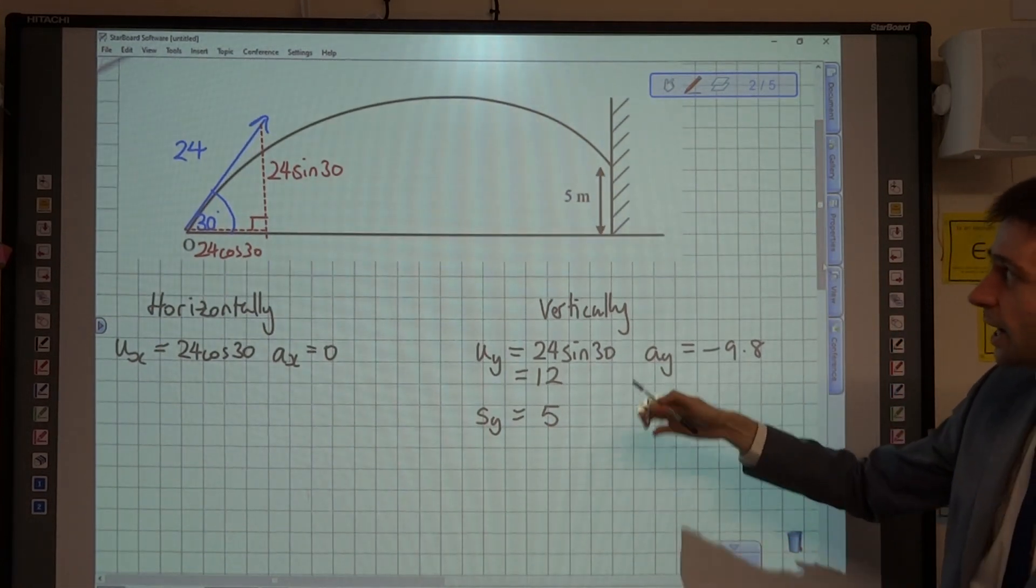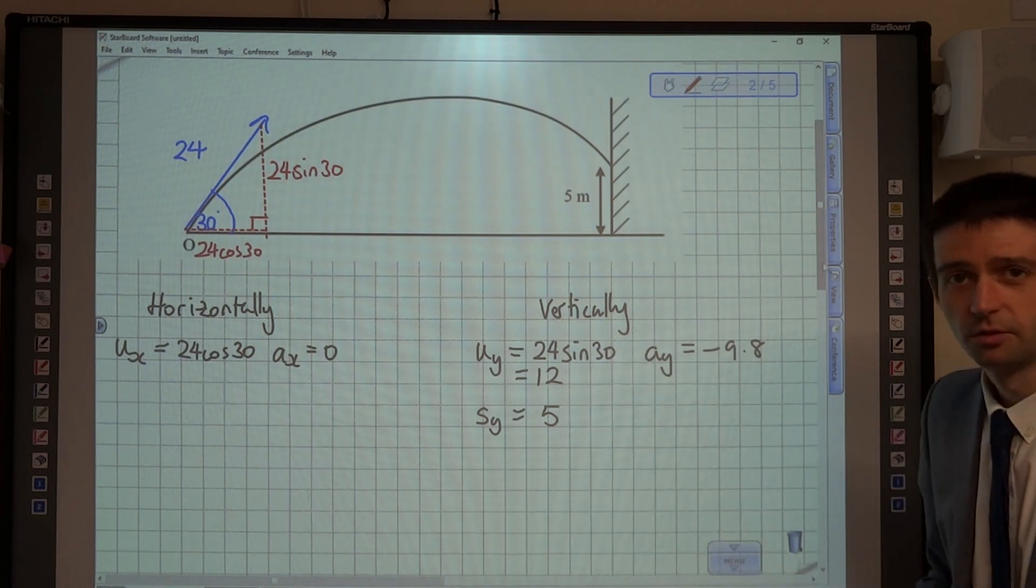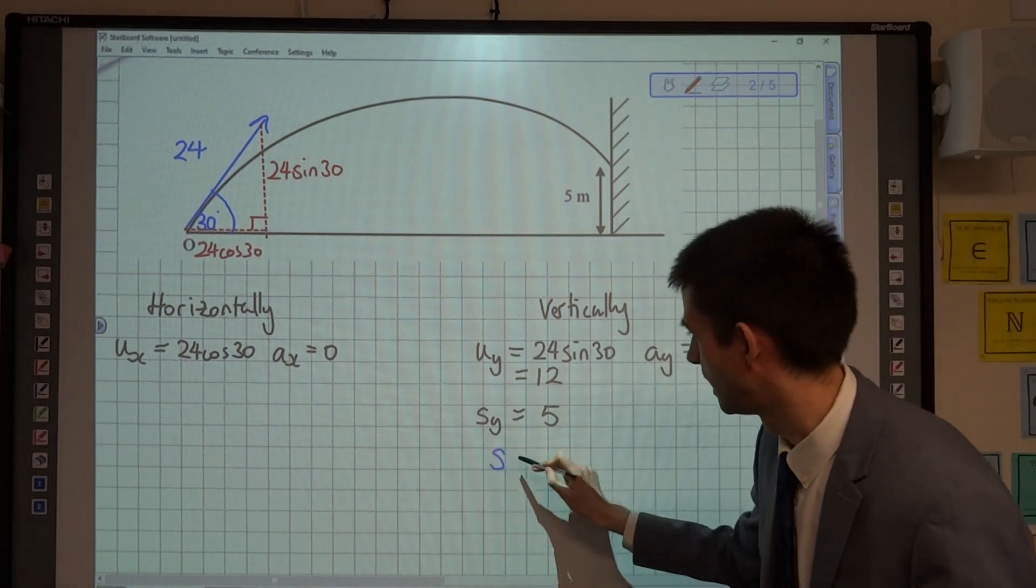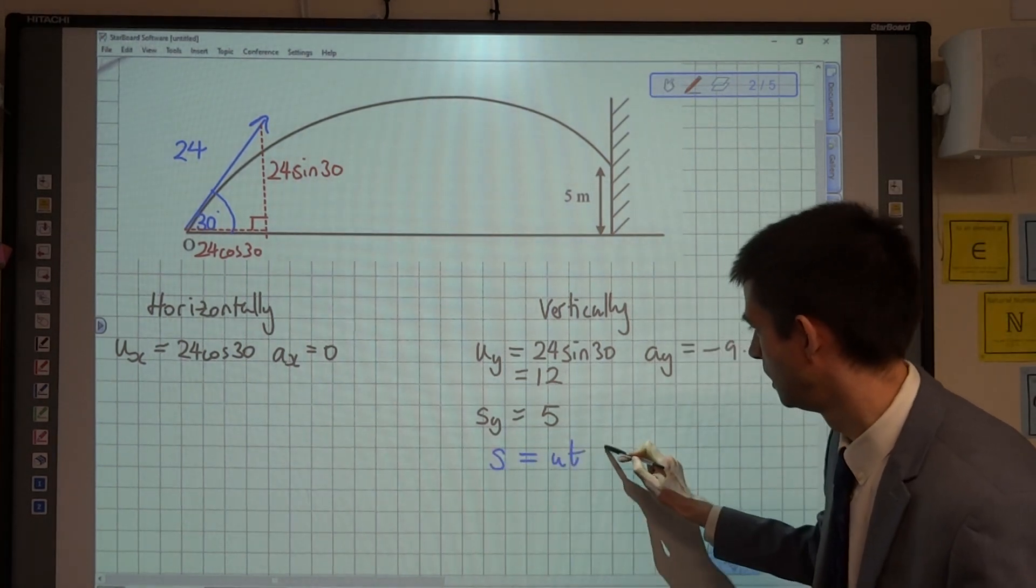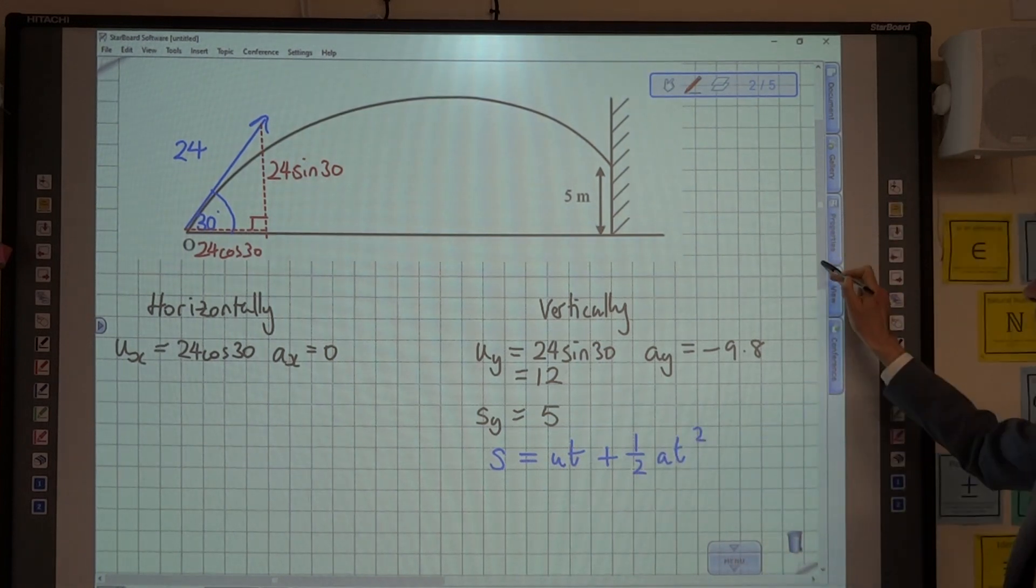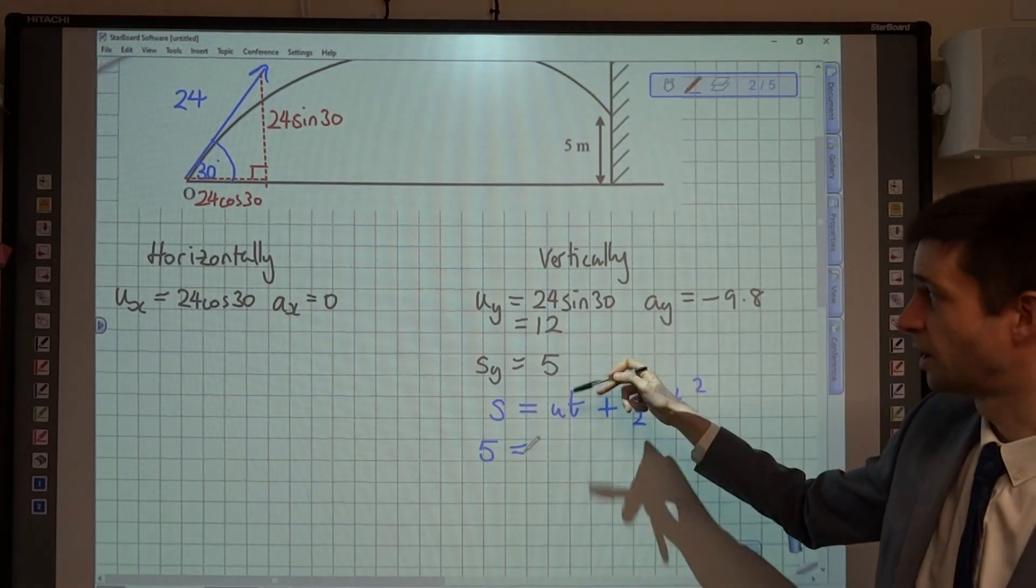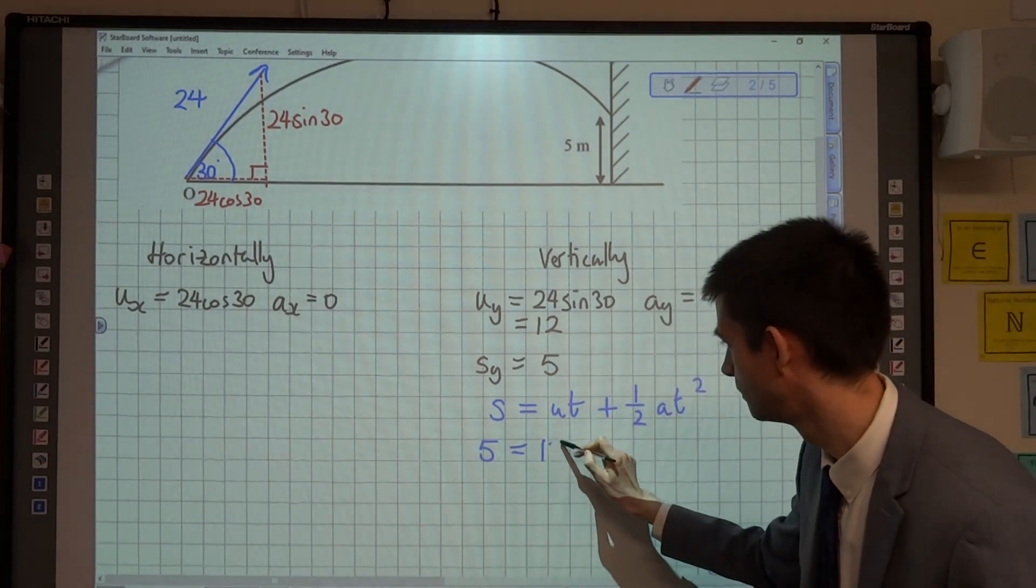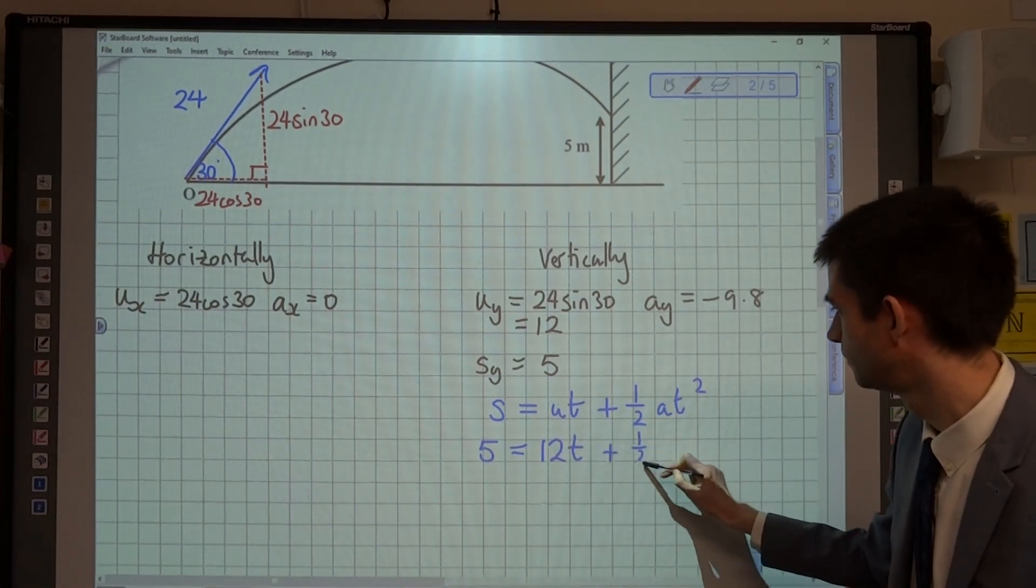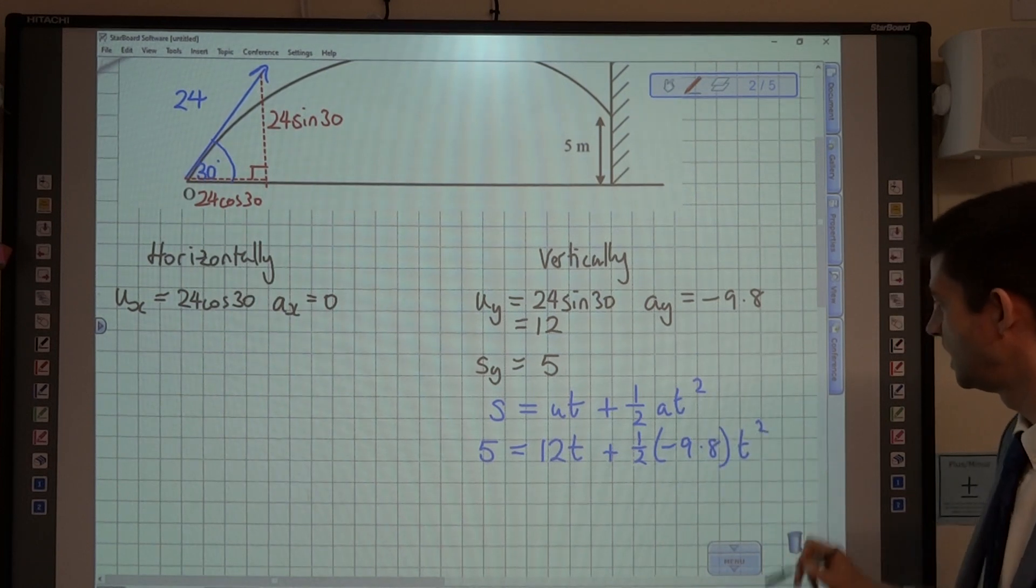I'm going to start looking vertically here, because I've got enough information to work out the time from the displacement vertically with the other information that I have. So I'm going to crack out the SUVAT, S equals UT plus a half AT squared. Vertically, S is 5. U is 24 sine 30, which we now know is 12.